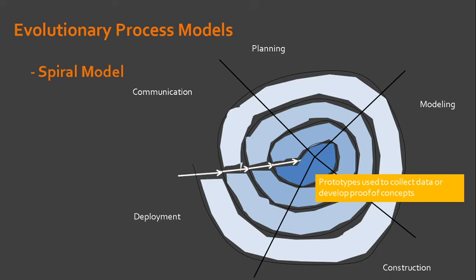It is also possible that prototypes are used in each cycle in order to collect requirements or generate proof of concepts. So, it's really possible in the spiral model that you will require a prototype.